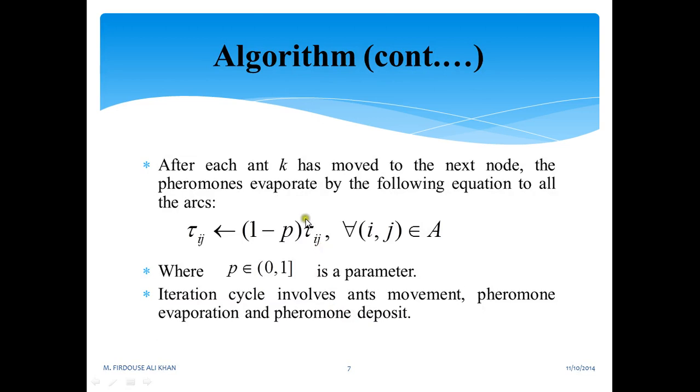After each ant k has moved to the next node, the pheromone evaporates by the following equation. This equation represents the evaporation of the pheromone. An iteration cycle involves ant movement, pheromone evaporation, and pheromone deposit. This is a cyclic process which keeps on happening when the ant goes to the food and comes back from the food to the nest.